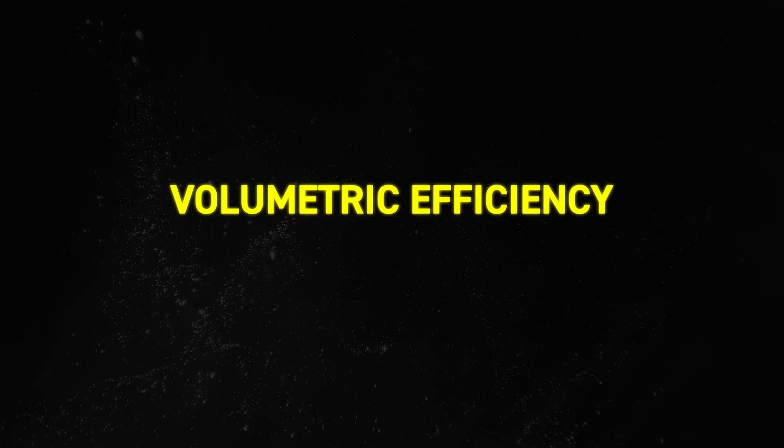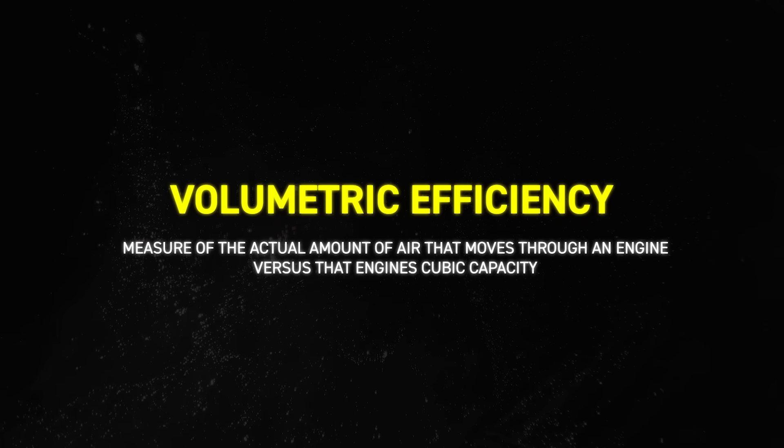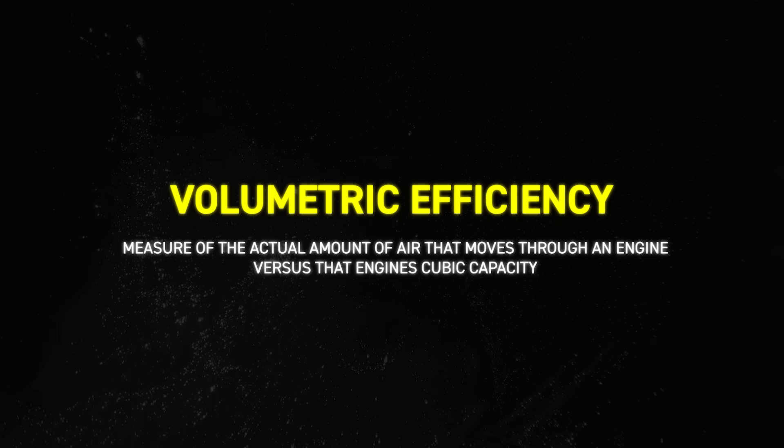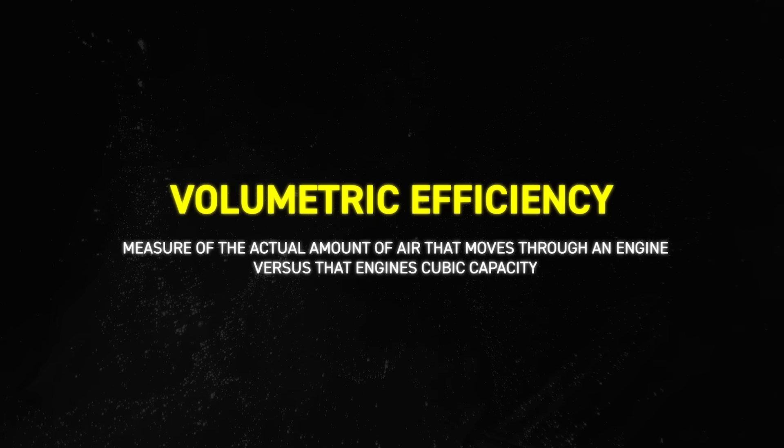That's because the engine is not 100% efficient at moving air from the intake to the exhaust. If it was, we'd say the engine has 100% volumetric efficiency. Much of the work in engine design and building is focused on improving this volumetric efficiency. Things like intake runners, exhaust headers, valves, and camshafts all play a big part in how efficient our air pump is at moving air from intake to exhaust. So that's volumetric efficiency — a measure of the actual amount of air that moves through an engine versus that engine's cubic capacity.